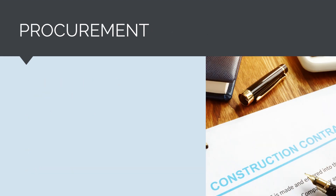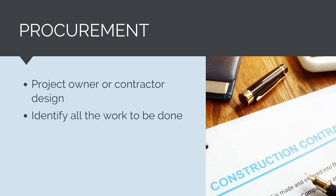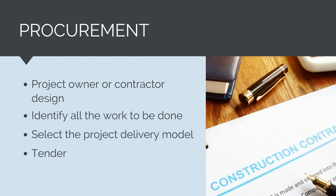The next stage in the project lifecycle is the procurement phase. Depending on whether the project owner decides to engage a contractor to complete the engineering and design under a design and construct model, or complete this design themselves under a construct-only model, will impact when procurement occurs. Regardless, in the procurement stage the project owner will identify all the work to be done, develop a procurement strategy, and select a project delivery model. They'll then run a tender to select a preferred contractor, negotiate the terms and conditions of the contract, and award the contract. At the completion of the procurement stage, the project owner will have a general contractor ready to begin works.